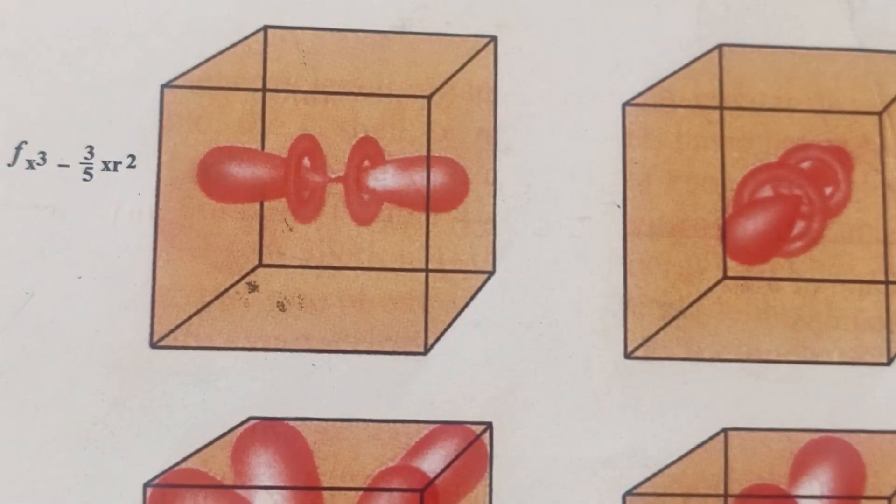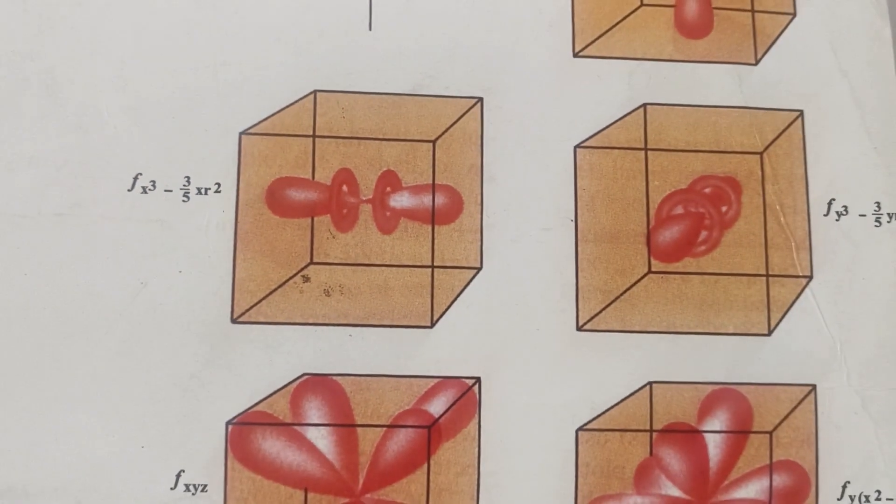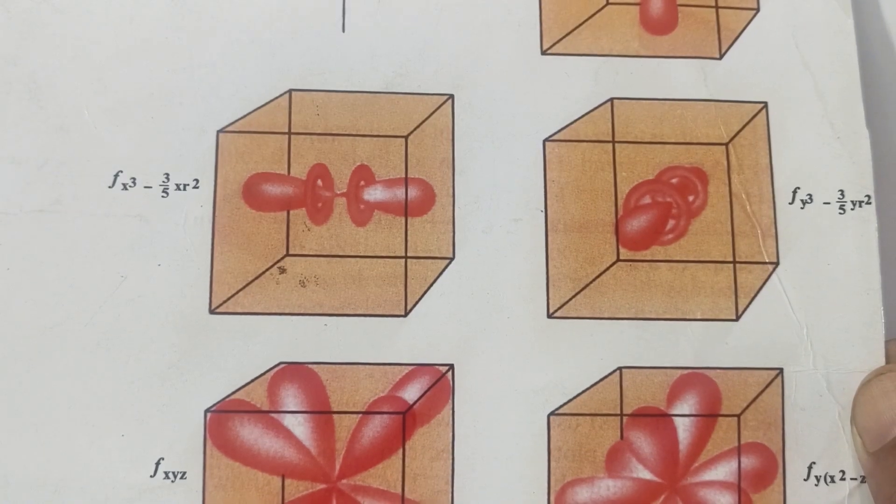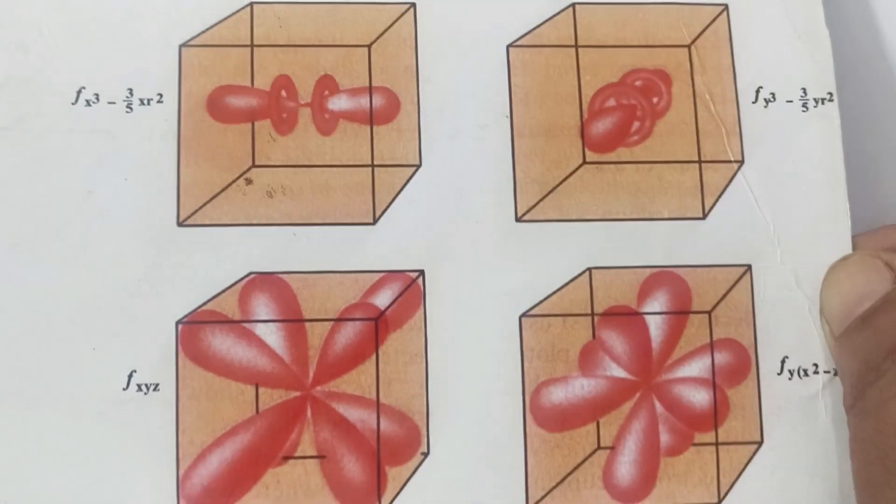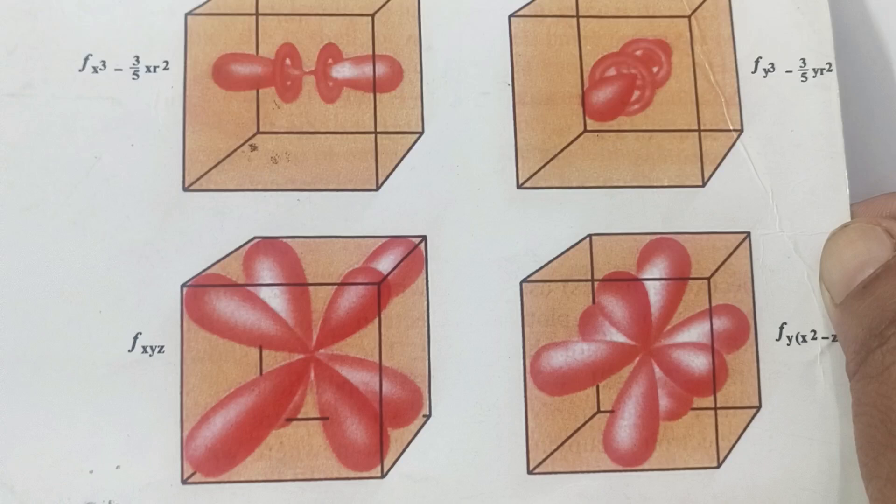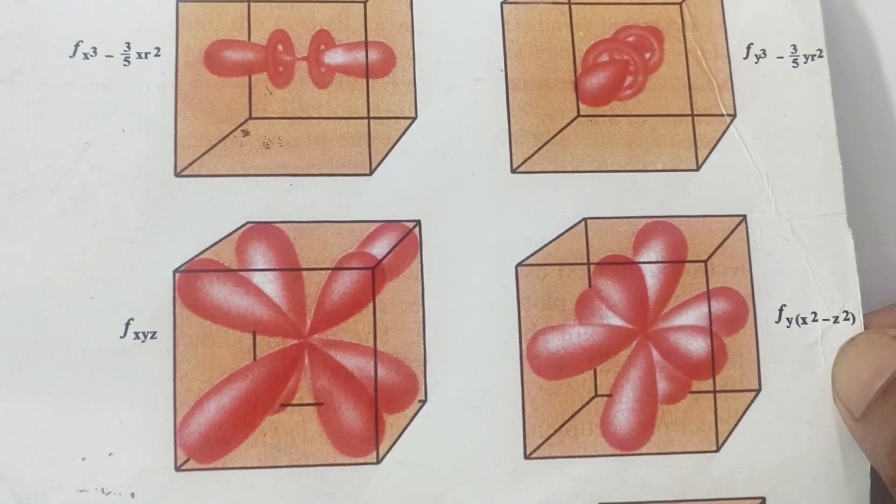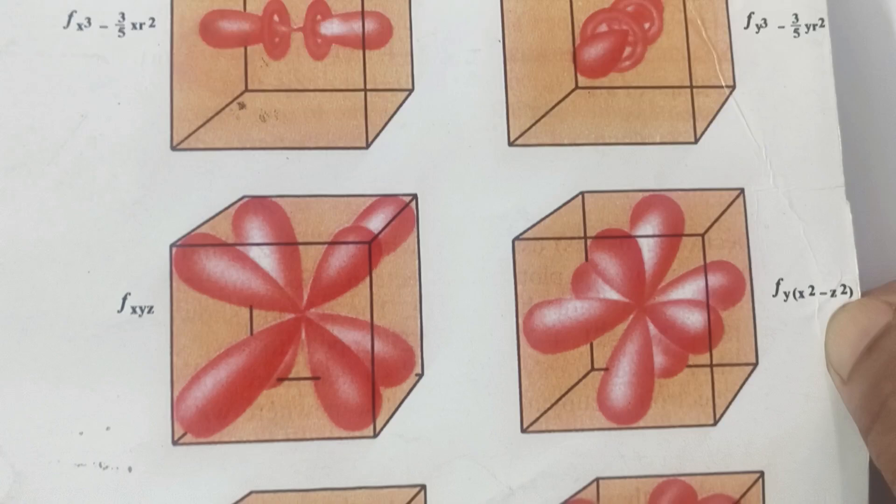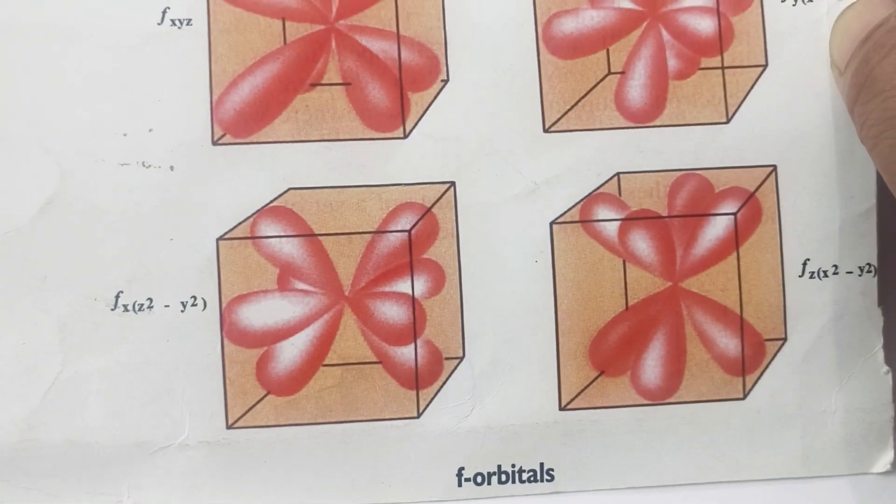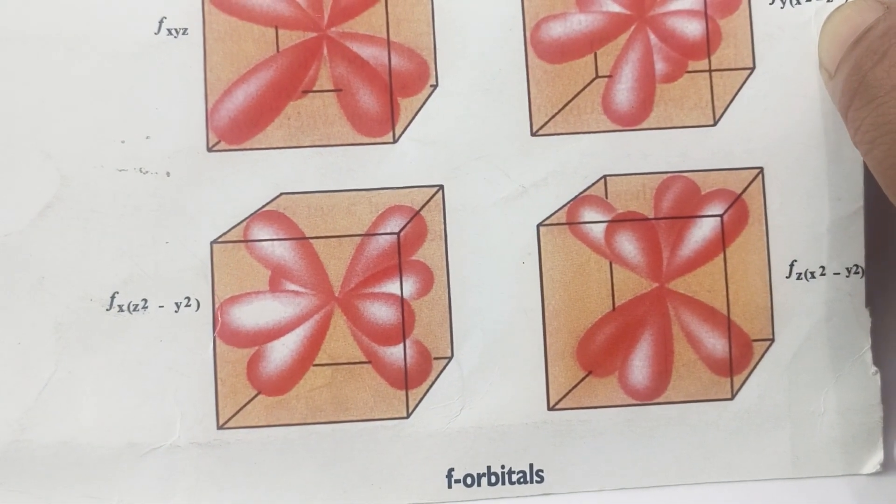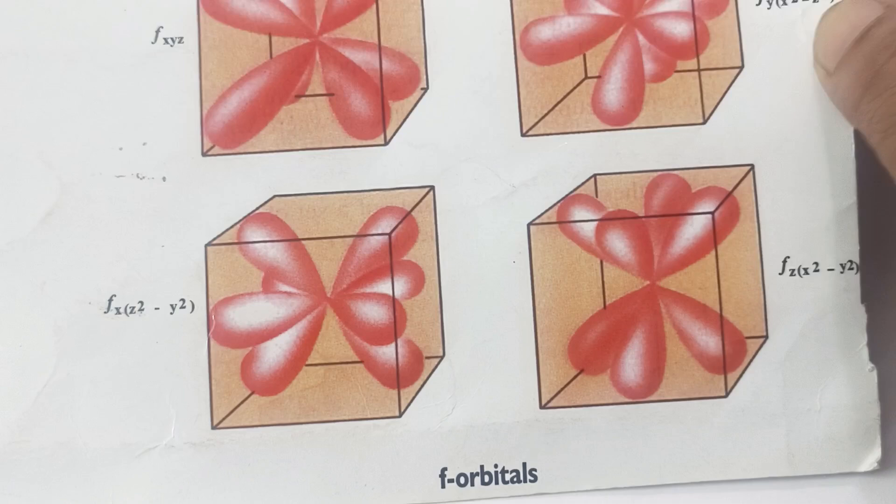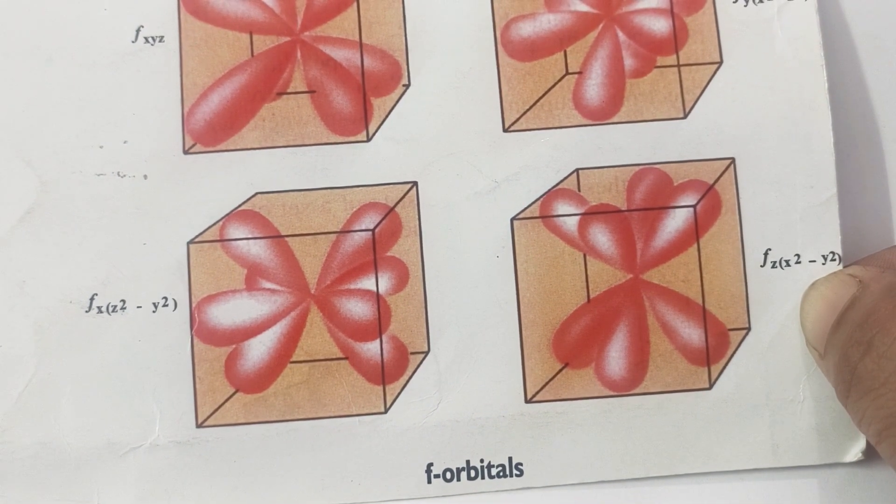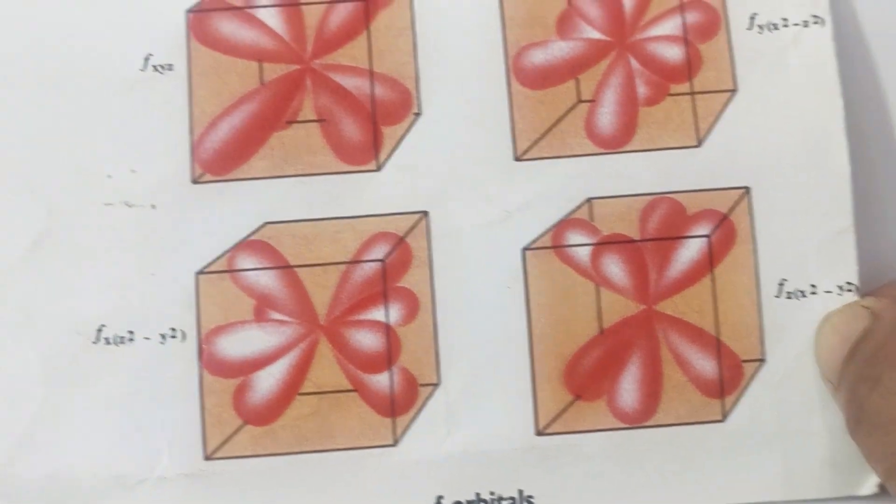Next orbital is f x cube minus 3 by 5 x r square, then next orbital is f y cube minus 3 by 5 y r square, next f x y z, next f y x square minus z square. The next two is f x z square minus y square and the last one is f z x square minus y square.